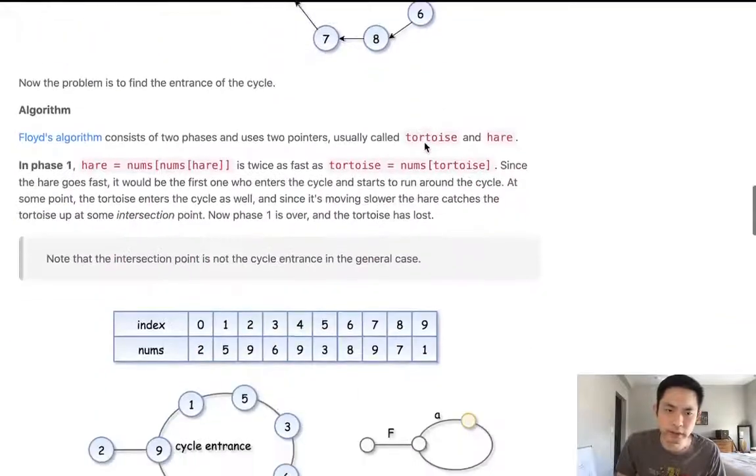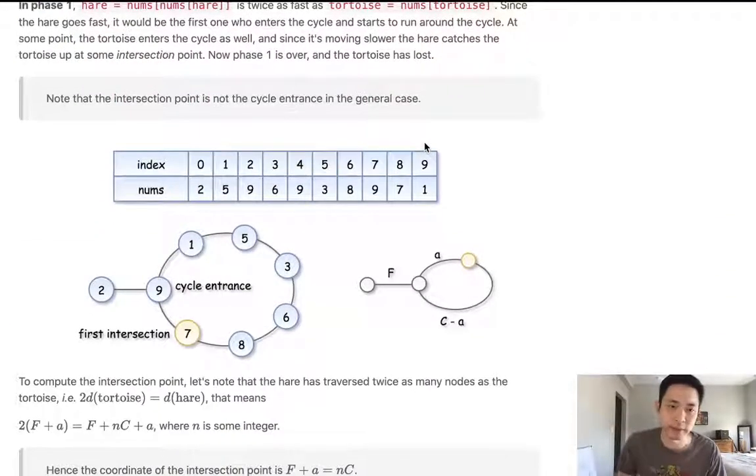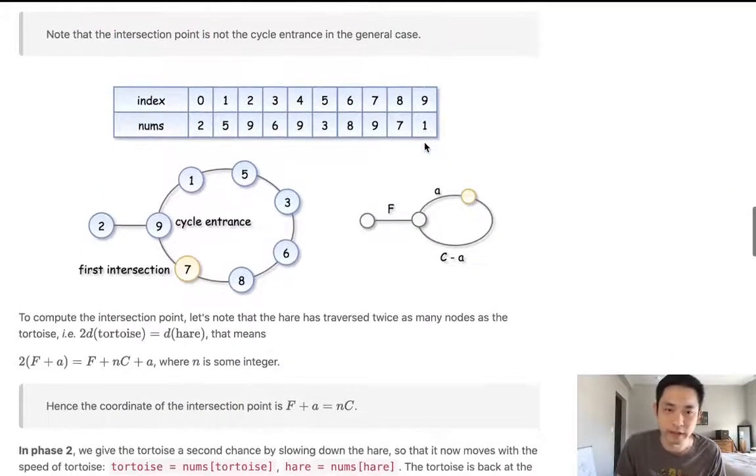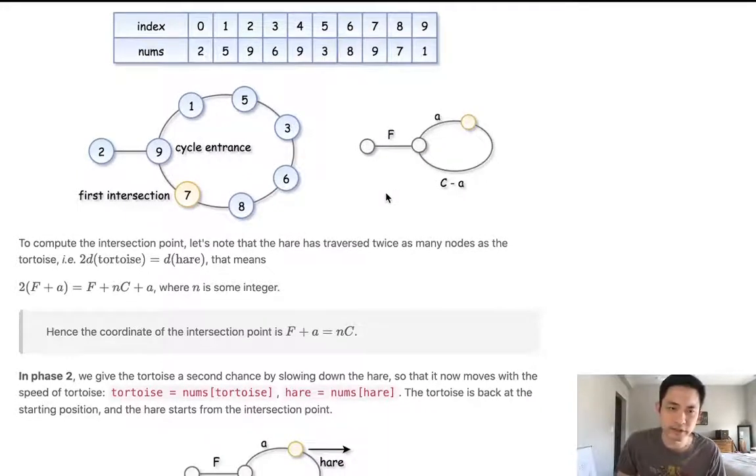And all you really need to know, like I've seen some mathematical proofs of why this is the case. But I think it's just better to understand that when we have one that moves twice as fast and the tortoise who moves just one position, right when they intersect,